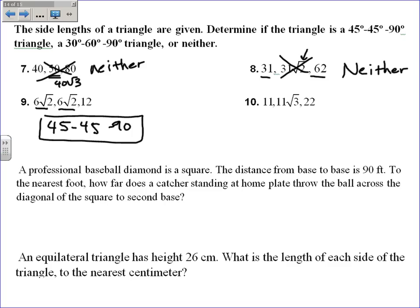Number 10: there's doubling just like a 30-60-90, and there's a root 3 present, so this must be a 30-60-90 triangle.